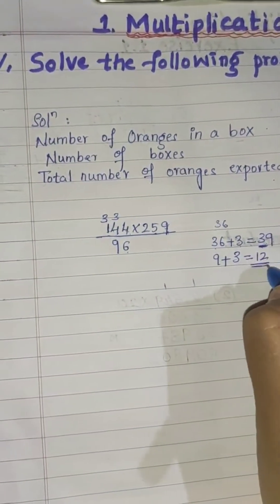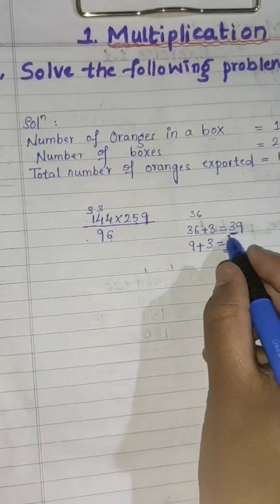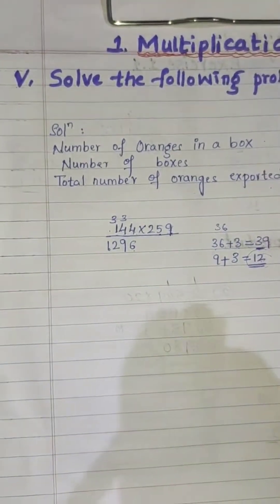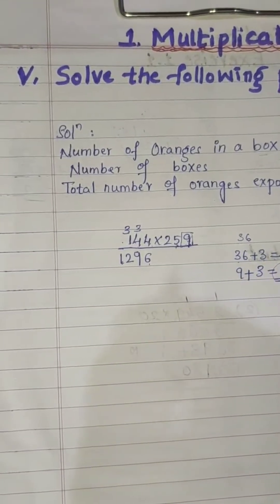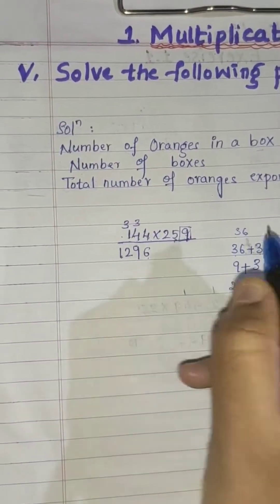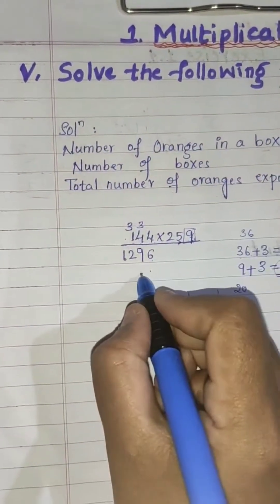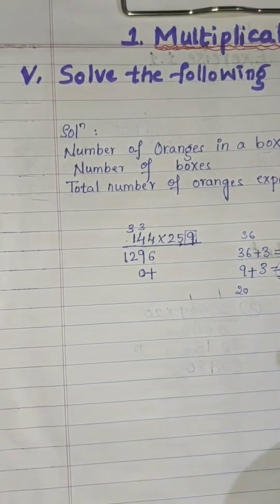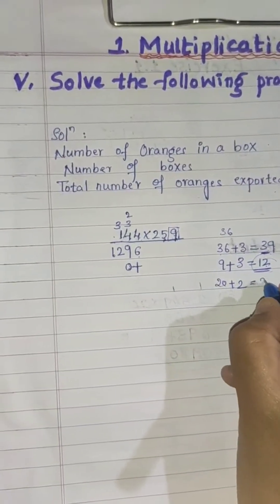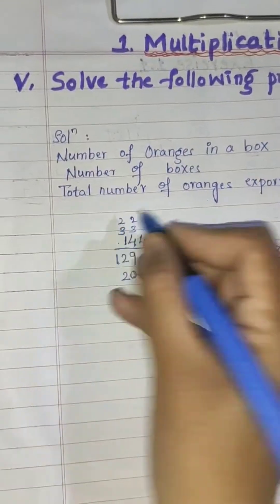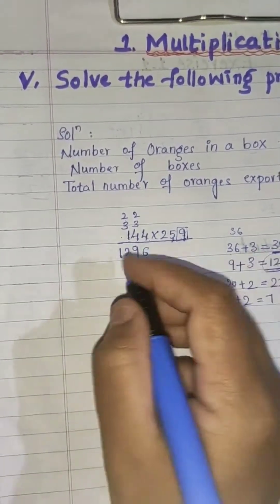Since there is no next digit to carry to, write the full 12. Now come to the digit in the tens place, which is 5. 5 fours are 20 — write 0 starting from the tens place and carry 2. 5 fours are 20, plus carry 2 is 22 — write 2 and carry 2. Then 5 ones are 5, plus carry 2 is 7 — write 7.